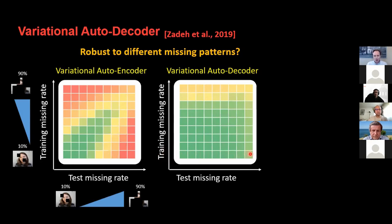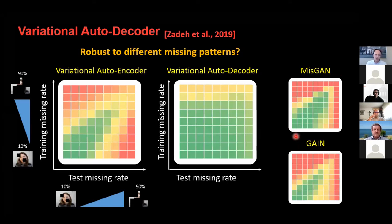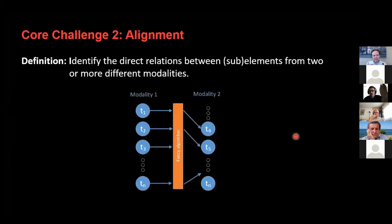This is an example of how we could improve robustness in real-world settings, looking at representation. The second technical challenge in multimodal is alignment. When I speak, maybe my gestures are synchronized with my speech, but in most cases these are weakly aligned with each other. Multimodal not only has the challenge of how to represent information, but elements from different modalities — like words and gestures — also need to be aligned to each other.